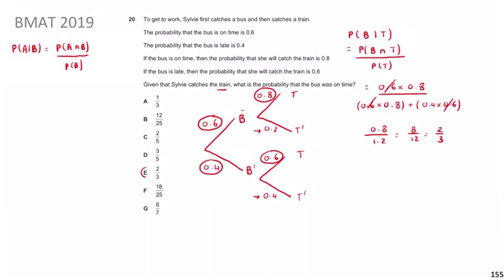The answer is 2/3, which is answer E. I really hope that made sense — how we use tree diagrams and this important conditional probability formula, which we'll keep seeing.